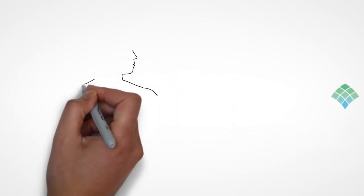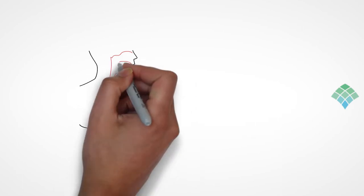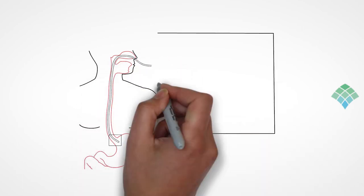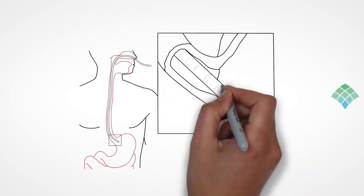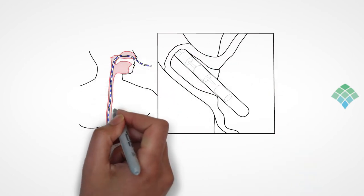The catheter is a small, flexible, pressure-sensitive tube. It will be passed through your nose, down your esophagus, and into your stomach. Sometimes this may be uncomfortable and cause gagging, but this is usually transient.